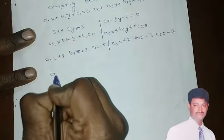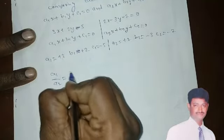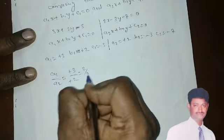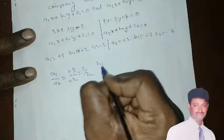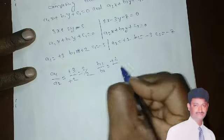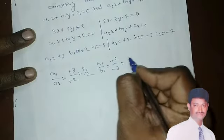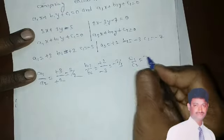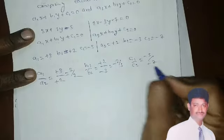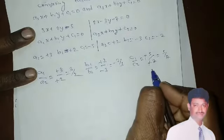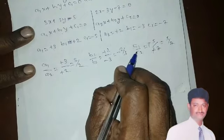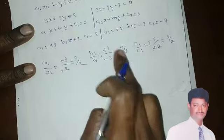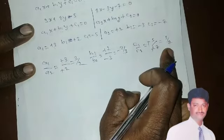Now comparing the ratios: A1 by A2 equals 3 by 2. B1 by B2 equals plus 2 by minus 3, which is minus 2 by 3. C1 by C2 equals minus 5 by minus 7, and since minus minus cancel, it becomes 5 by 7. So the three ratios are 3 by 2, minus 2 by 3, and 5 by 7.